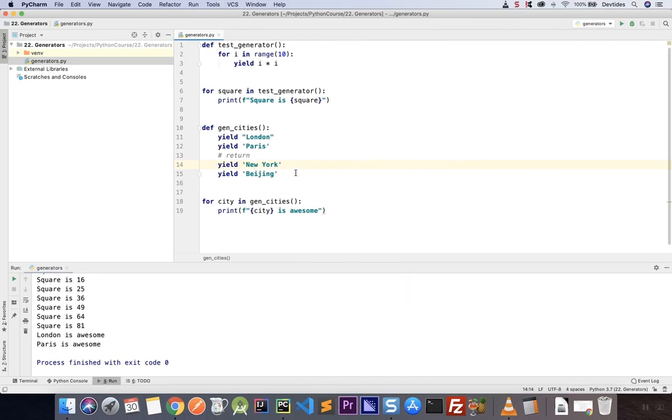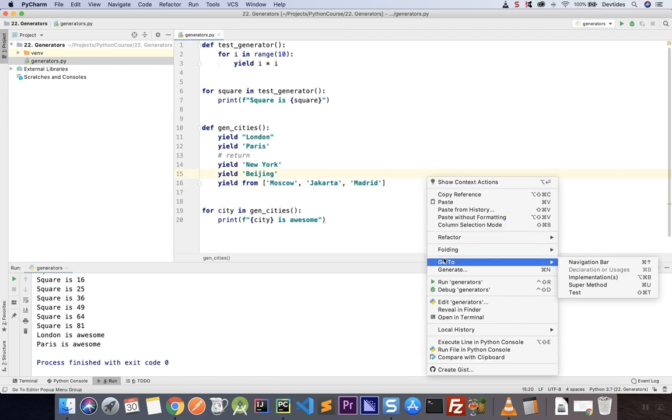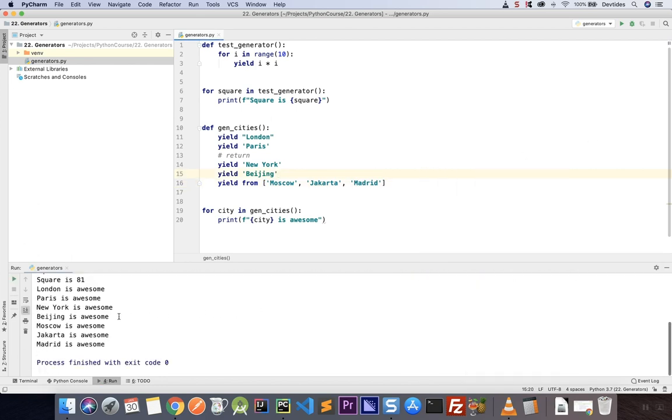So let's try that out after our last yield. So I'm going to say yield from, and here is a list, Moscow, Jakarta, and let's say Madrid.